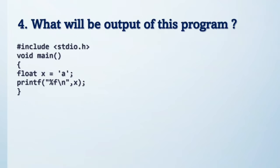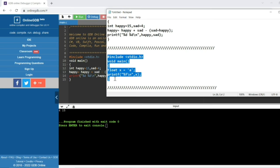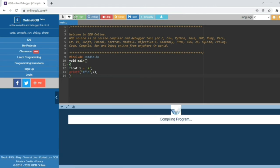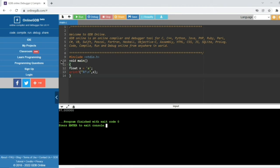Let's move to the next question. Try to solve this question, friends. It's a very easy question. See here, output is 97. Here x is a float but a is a character, so it will convert ASCII value 97 and print 97.0000. So answer is 97.000.